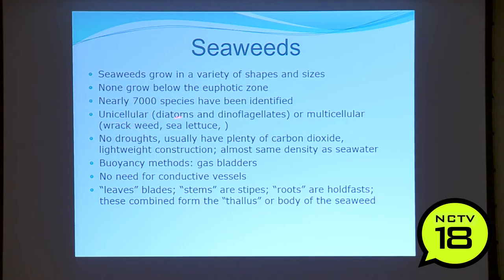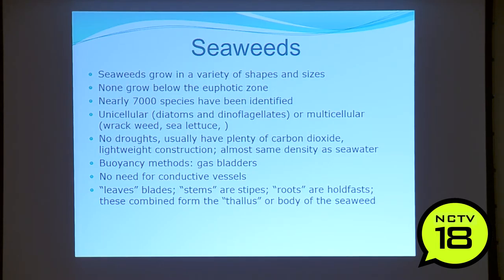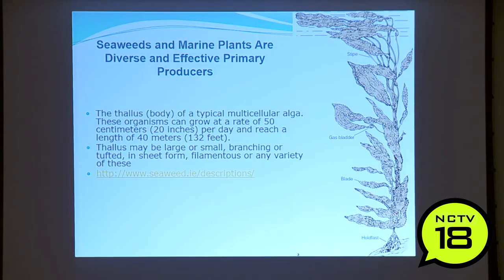There are 7,000 species of seaweed — unicellular like diatoms or multicellular like bladderwrack and sea lettuce. They don't have to deal with drought, usually have plenty of CO2, and are almost the same density as salt water. They use gas bladders — those little bladders on Irish rockweed — to stay in the photic zone. They don't need conductive vessels. Their leaves are called blades, stems are called stipes, roots are holdfasts, and these combine to form the thallus or body of a seaweed.